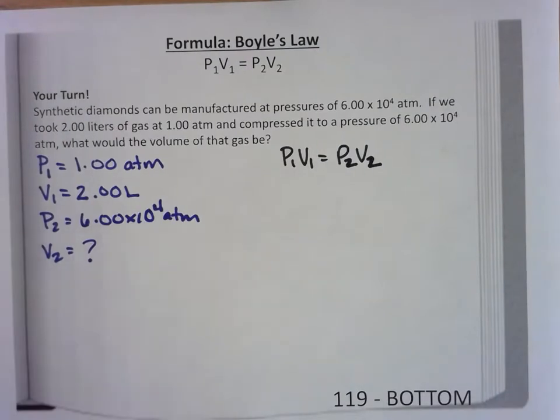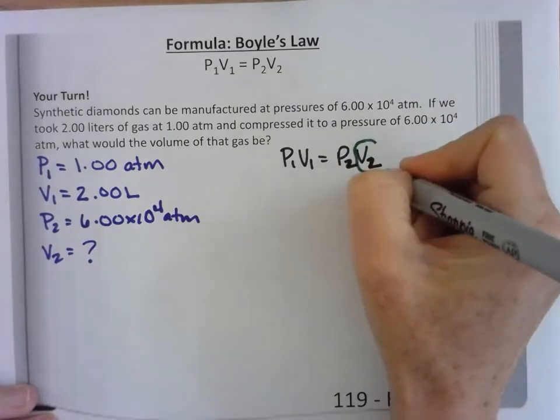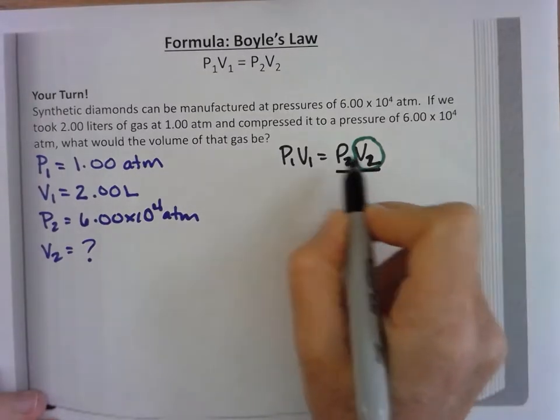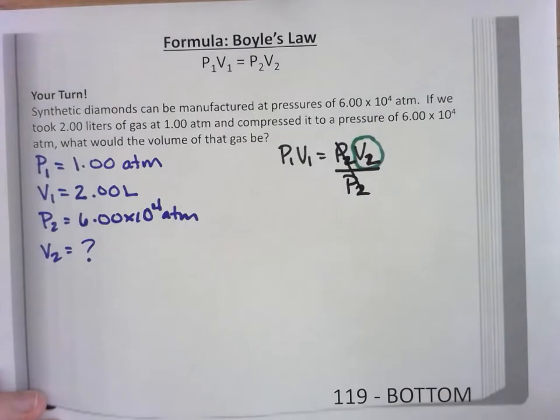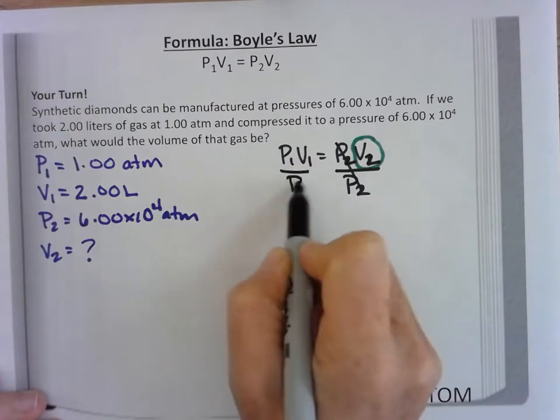I'm looking for V2. So if you're struggling with rearranging, you'd circle that. This is multiplied, so I'm going to divide both sides by the variable I need to move. I need to keep V2 by itself, so I need to move P2. If I do it to one side, I do it to the other side.